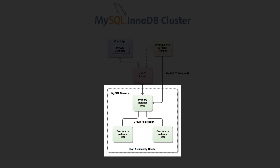Group Replication is a plugin that provides a highly available replicated database, and it does it by implementing virtually synchronous replication using a group communication system. Servers in Group Replication are part of groups, and the notion of group is kept by all members, so every server knows which servers are part of the group, which ones left, joined, had failures, and so on.